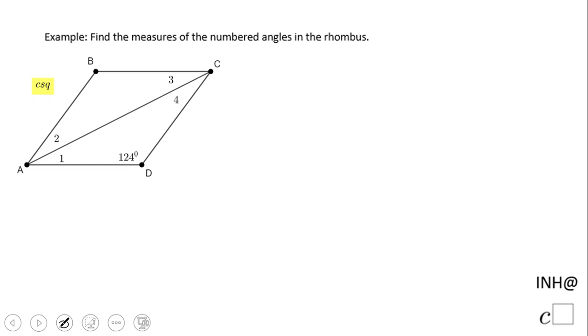Welcome back to C square. In this problem, we're going to find the numbered angles in a rhombus. So what you see here is a rhombus - all sides are equal. And what is cool